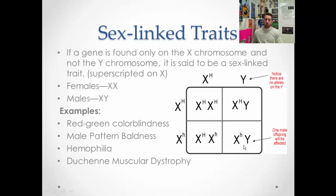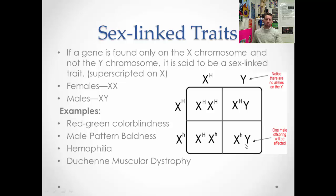These two individuals — this carrier female and this affected male — show how sex-linked traits affect females and males differently. A female can get just one copy of this recessive allele and not be affected; she'll simply be a carrier. A male gets it once and he has it, because he doesn't have another X chromosome that could offset its effects with a dominant X^H allele.